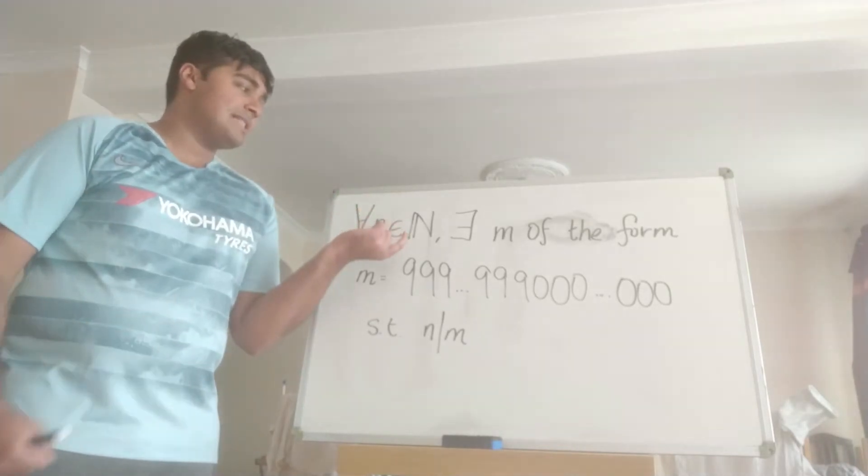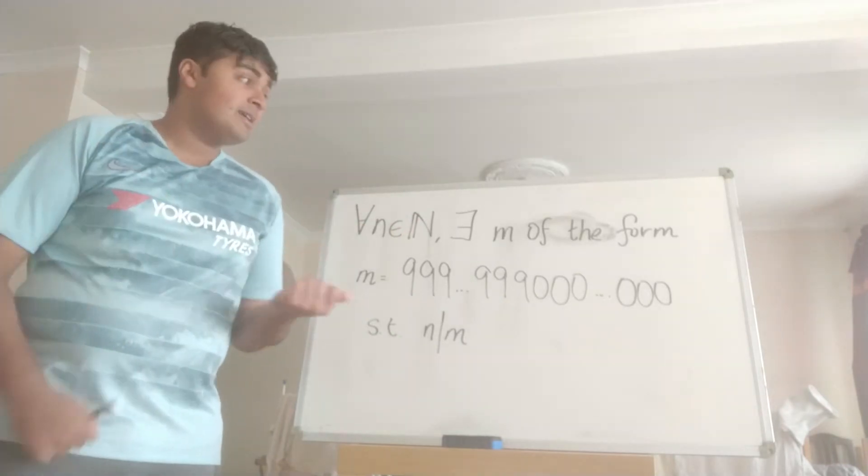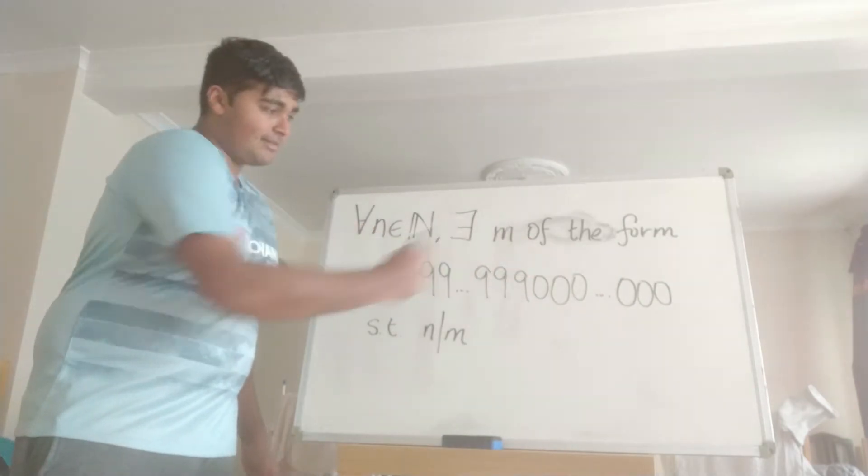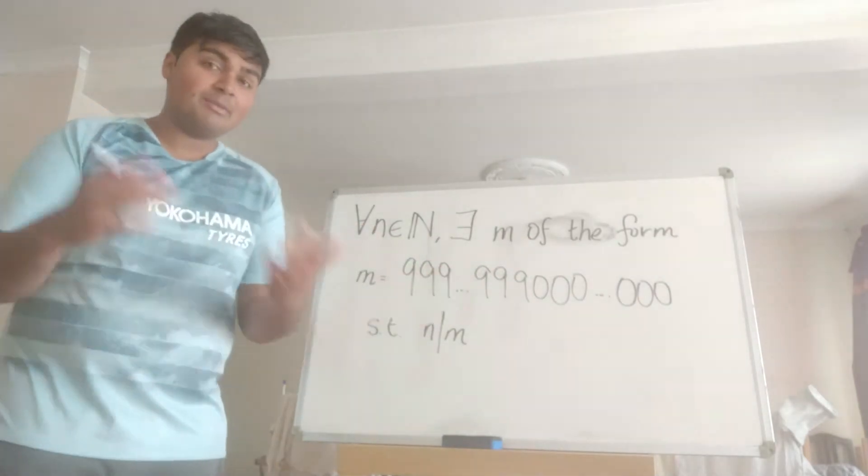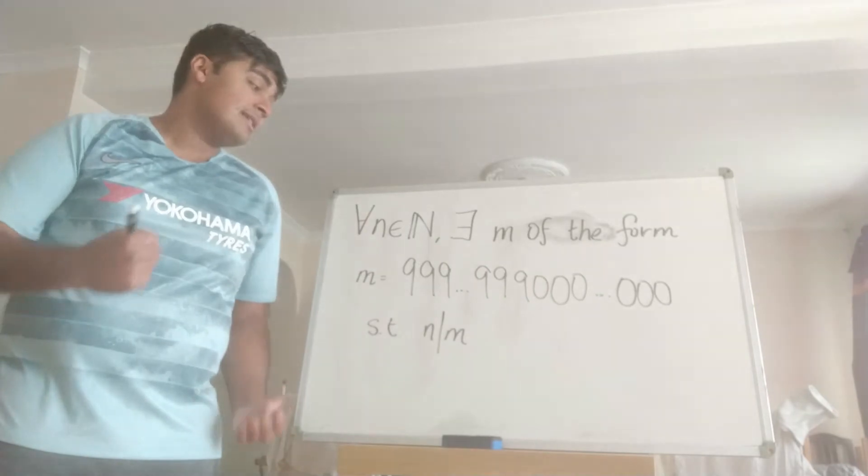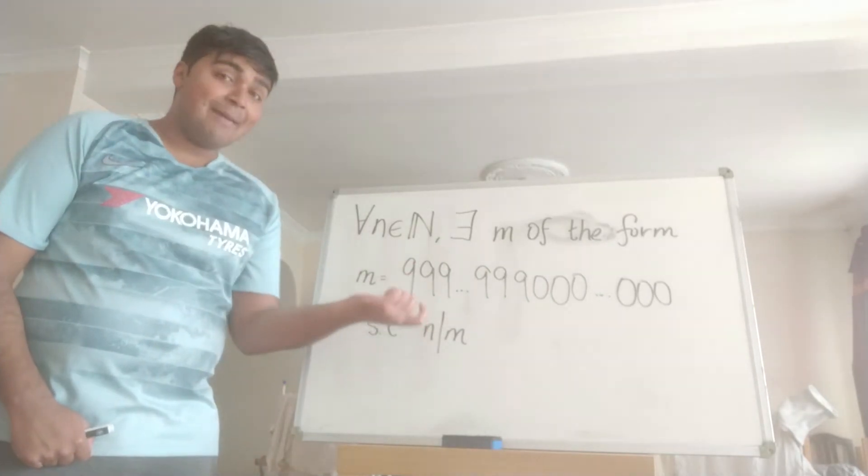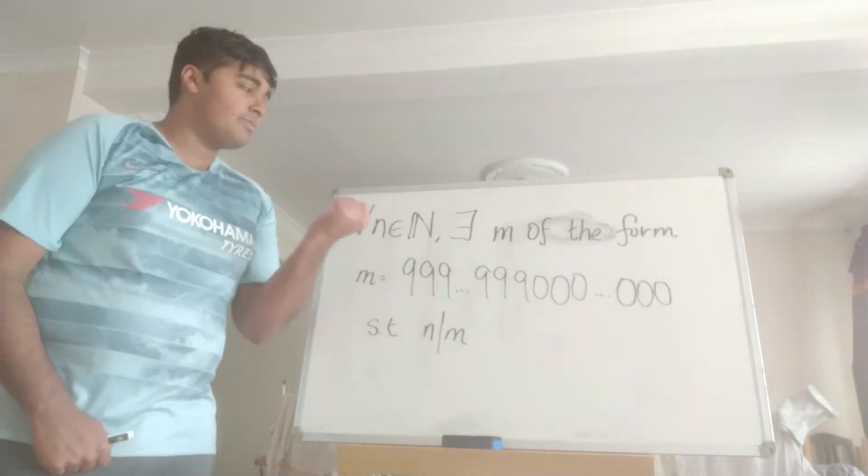We want to prove that for all natural numbers n, so any positive integer n, there exists a positive integer m of the form this thing here. So it's a bunch of nines, so some number of nines followed by some number of zeros, such that n divides m. So in other words, m, this guy here, is a multiple of n.